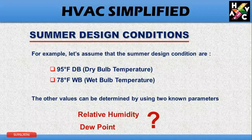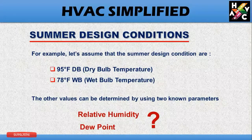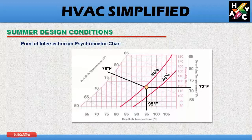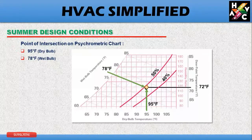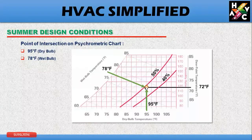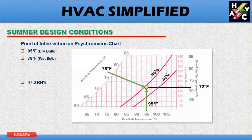Let us find the relative humidity and the dew point temperature on the psychrometric chart using 95°F as the dry-bulb and 75°F as the wet-bulb. The dry-bulb temperature at 95°F intersects with the wet-bulb temperature at 78 degrees Fahrenheit — this is your point of intersection. At this point of intersection, your relative humidity is approximately 50%, and to be precise, 47.3%.